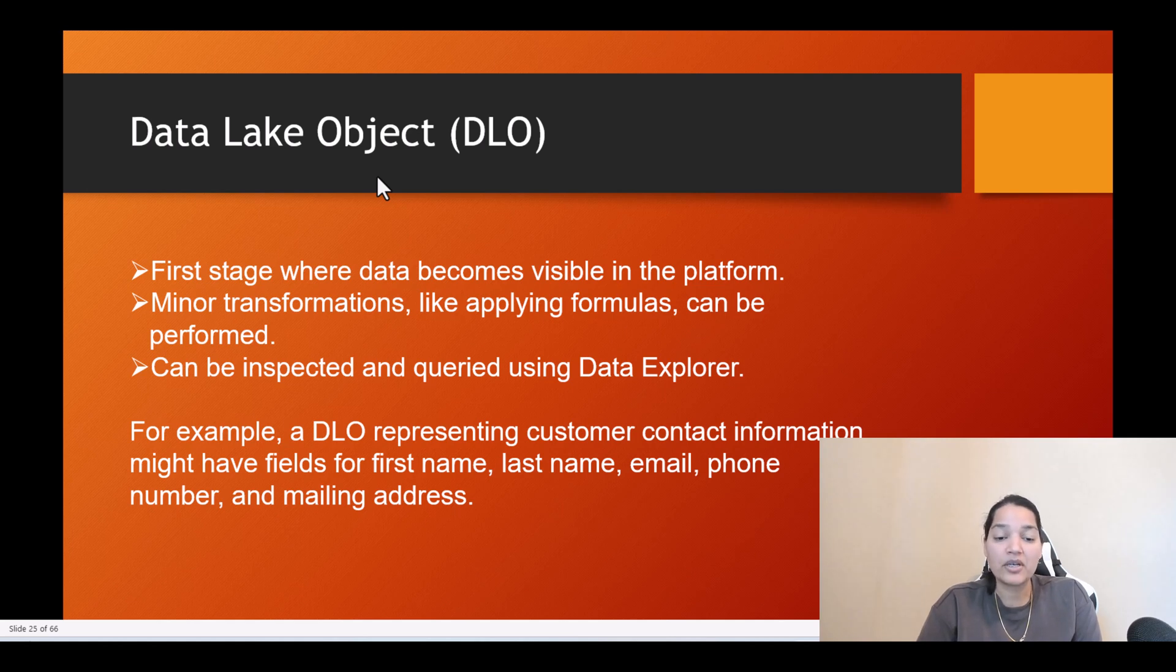For example, a DLO representing customer contact information might have fields for first name, last name, email, phone number and mailing address. So that is a DLO, which is going to give you raw unprocessed data coming from the external systems. We were bringing contacts, so we had fields like first name, last name, phone number, etc. That is what a DLO represents.